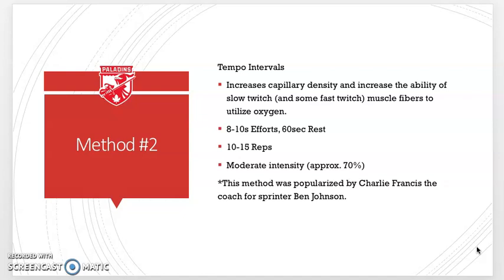Tempo intervals are done using 8 to 10 second efforts with 60 seconds or more of rest. We want to consistently use the aerobic system without tapping too much into the anaerobic system, so we use moderate intensity — approximately 70% effort — for 10 to 15 reps. For those who follow Olympic sprinting, Ben Johnson's coach Charlie Francis was a big believer in this system. His sprinters did tempo intervals on their low days while doing full sprints — 100s, 50s, 75s, starts — on their high days, because tempo intervals don't put a big strain on the body.